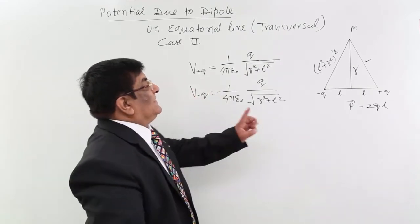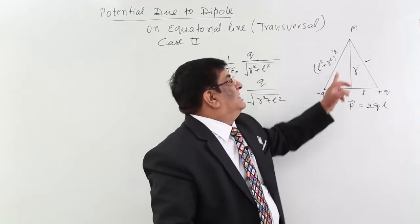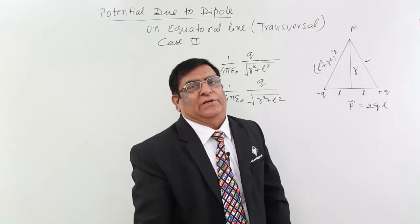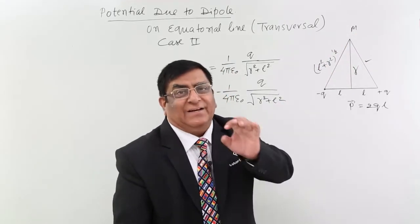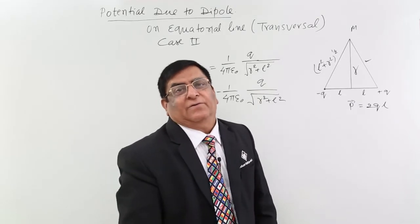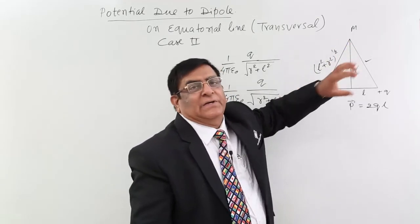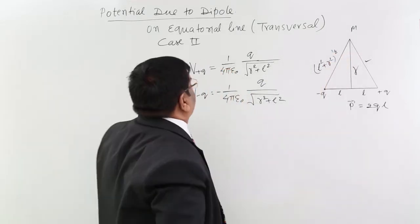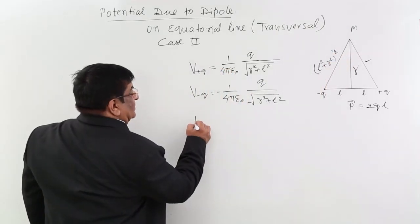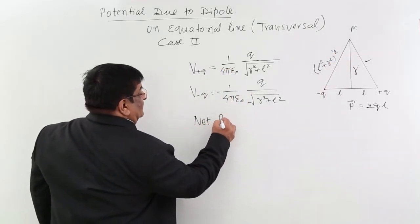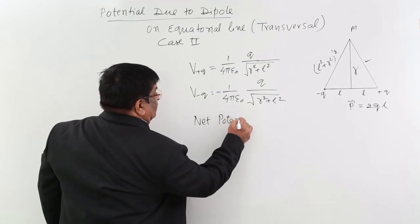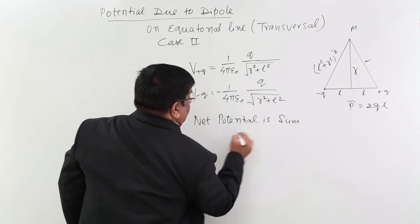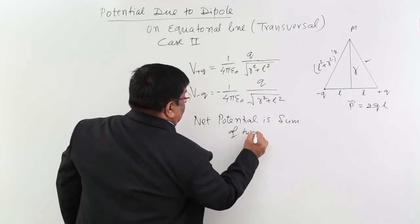Now, what is the direction of the potential due to each charge? There is no direction, because potential is a scalar quantity — and that is the benefit here. We do not have to draw vectors. It is only a scalar quantity. So the total or net potential is simply the sum of the two.